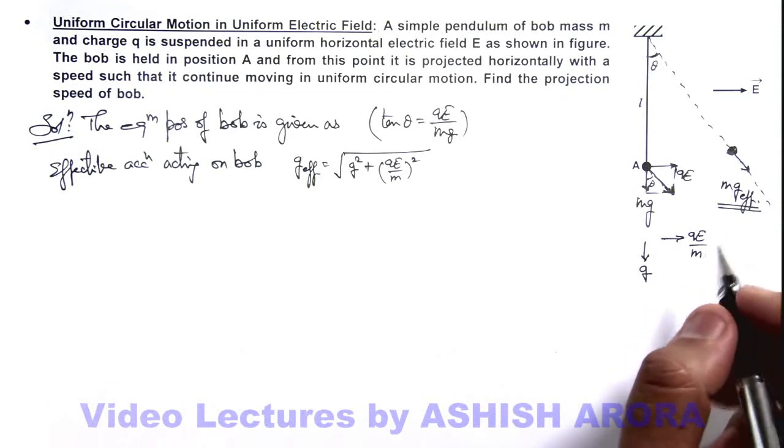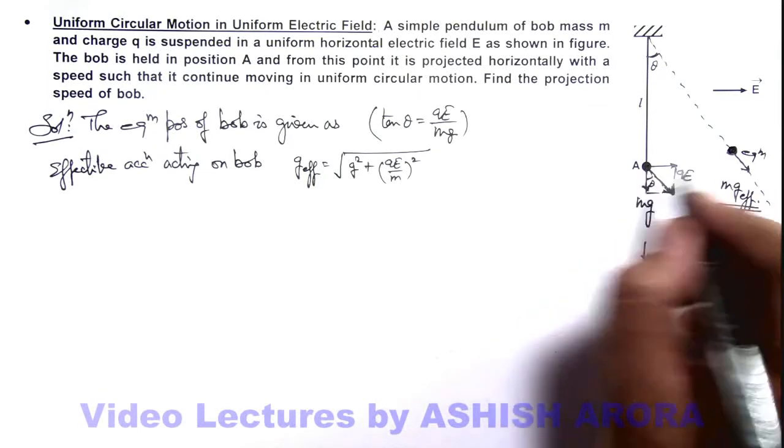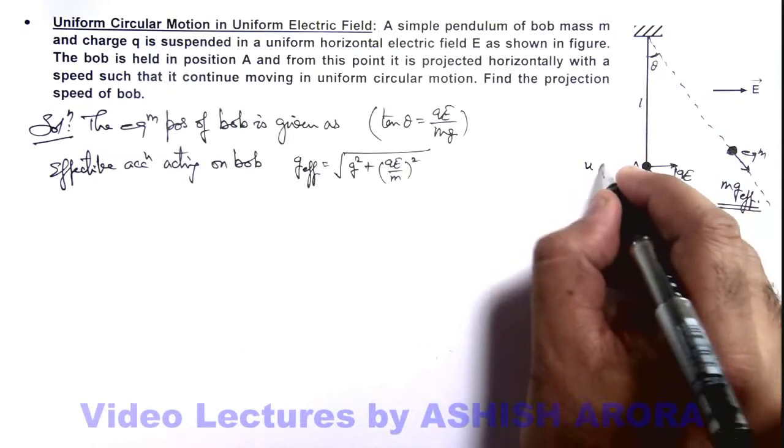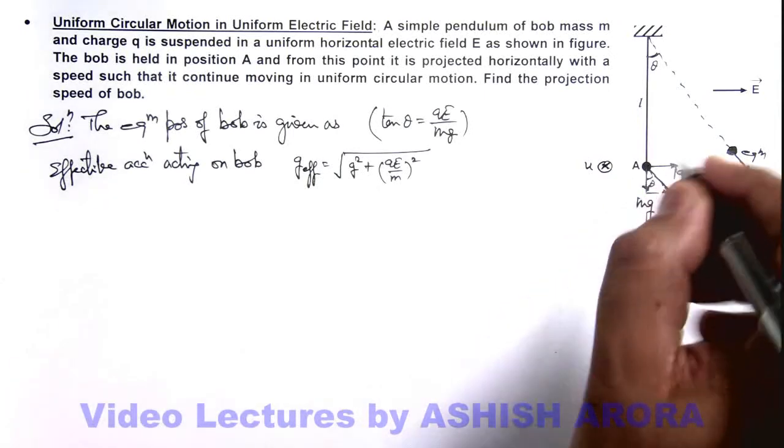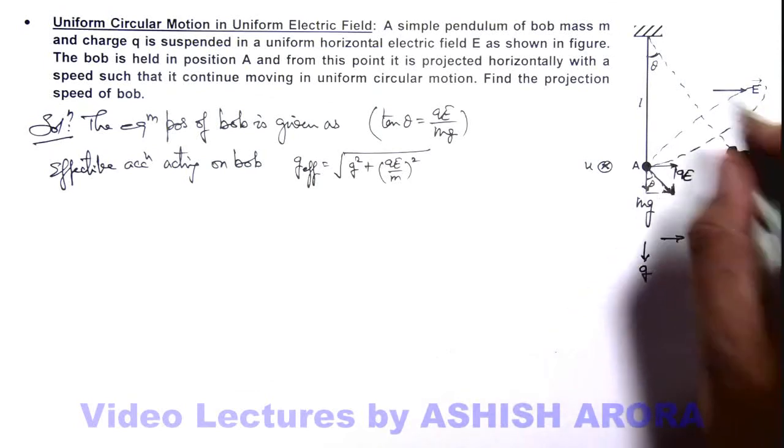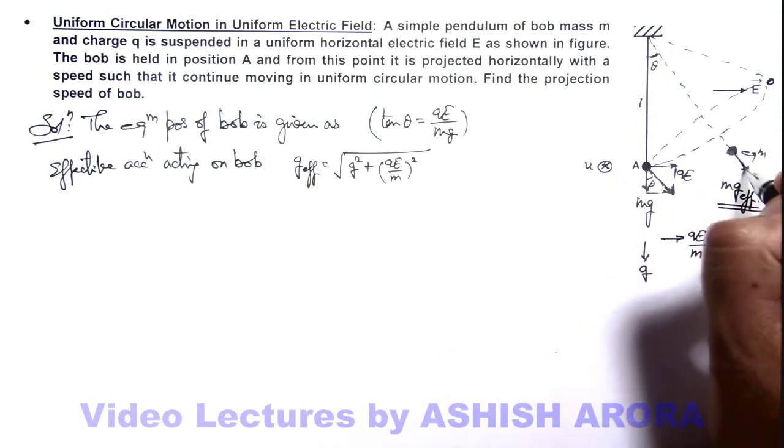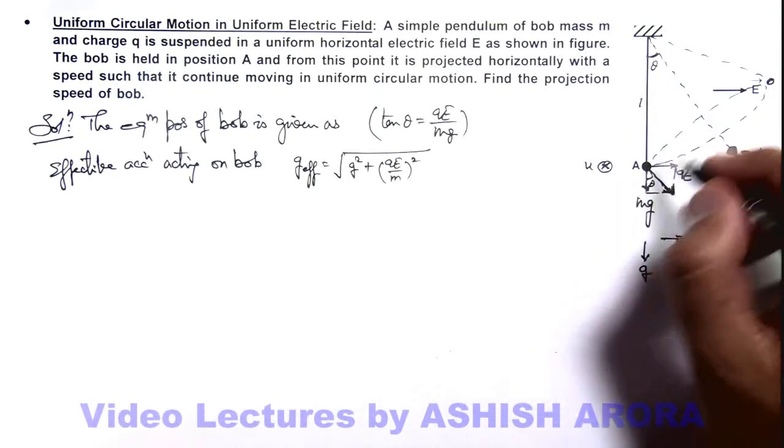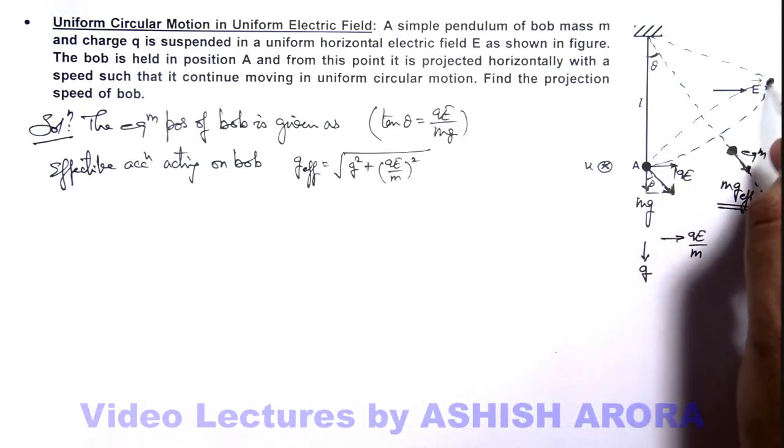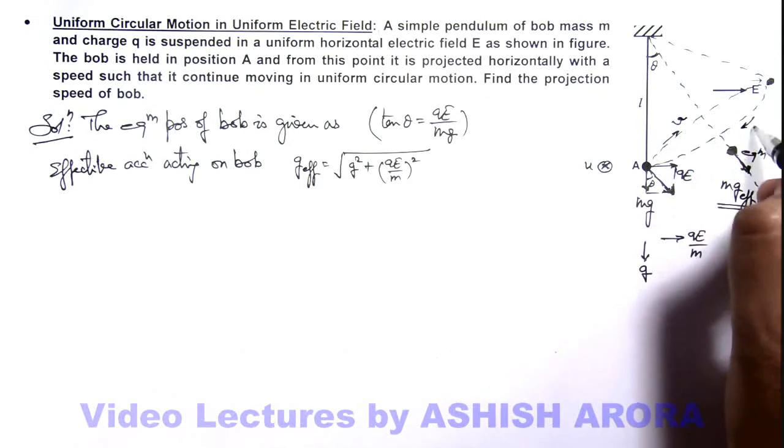And in this situation if this is the equilibrium position, and from the initial position the bob is thrown horizontally in a normal direction, say if we throw it with a speed u which is in the direction normal to the plane of this paper, then it'll have a tendency to revolve in form of a conical pendulum like this. As this is the line along which the net force is acting on it, so the ball will continue in a conical pendulum in this fashion which I have drawn here. And in a conical pendulum the speed of circular motion of a particle, of a bob, remains same.